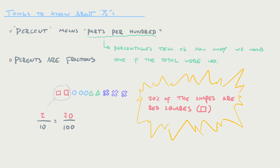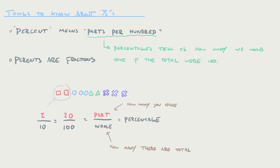What this means is that we don't actually have to have 100 things. If we did have 100 of them, there would be 20 red squares. But here in this sample size of 10, only 2. So 2 out of 10, but they're the same fraction, and so we would still say that's 20%. This is giving birth to what's known as the parts per whole model.